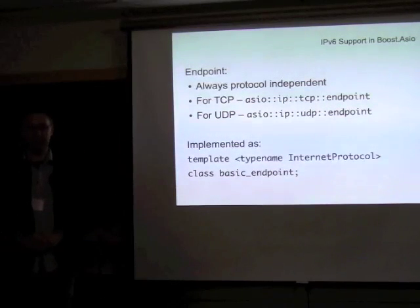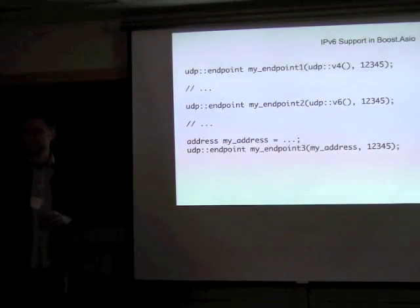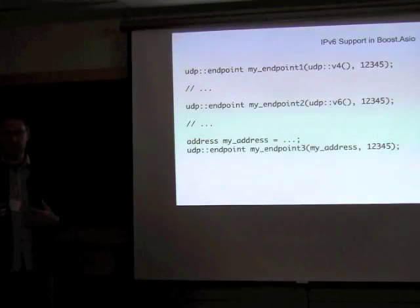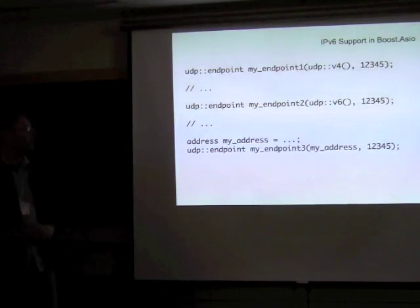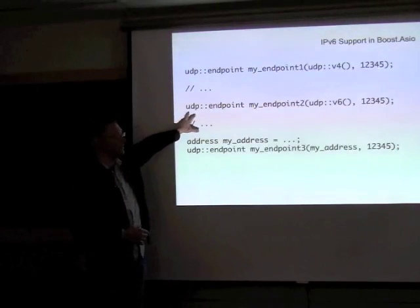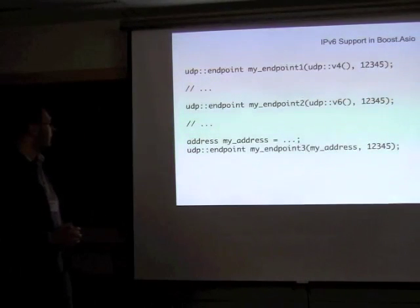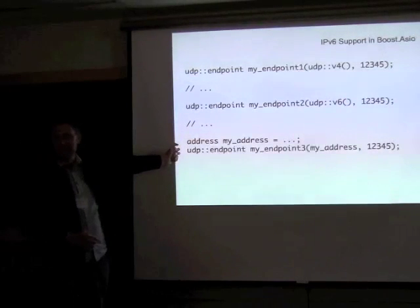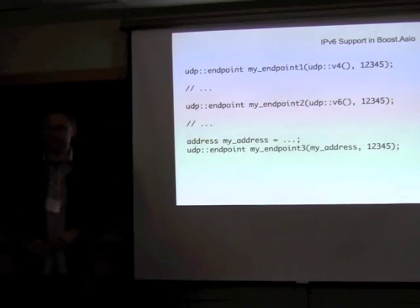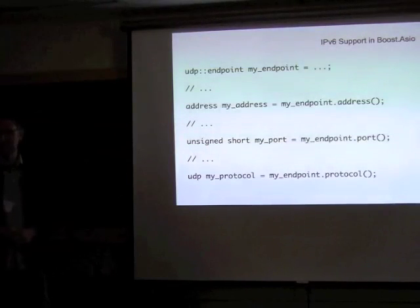There are several ways to construct an endpoint. For a listening endpoint — one using the any address — you can either explicitly say you're creating one for IPv4 or IPv6 with the same port number. Alternatively, if you've already obtained your protocol-independent address object, you can construct the endpoint from that. And if you need to get the elements back out again, there are accessor functions for that.